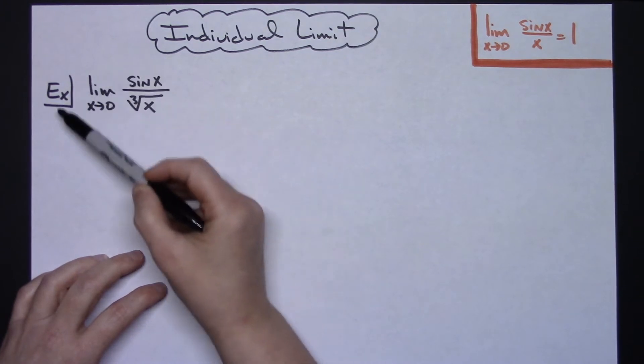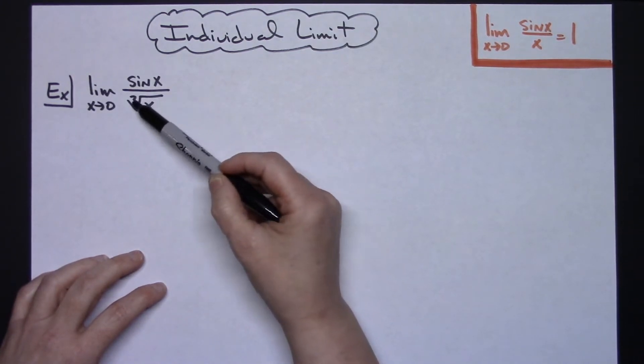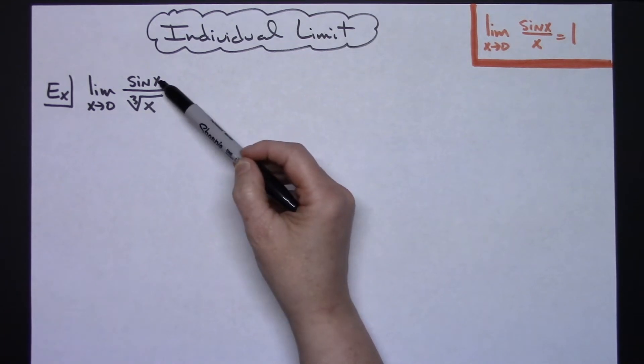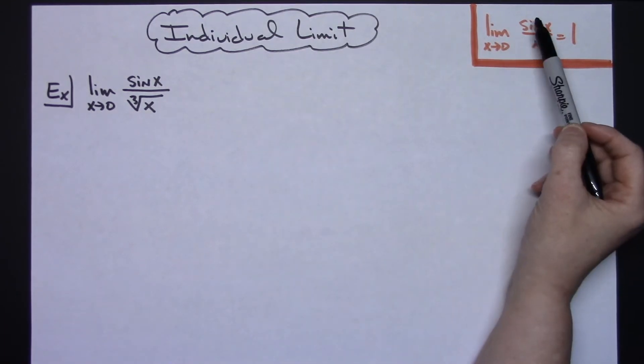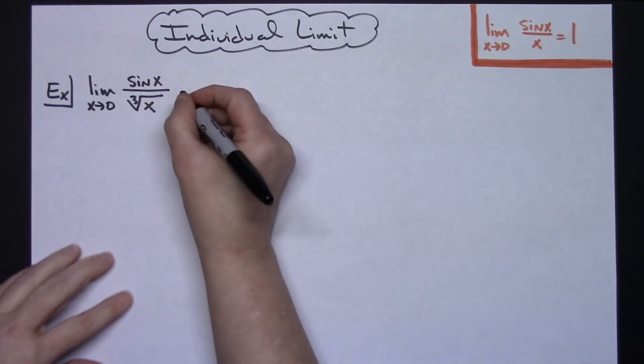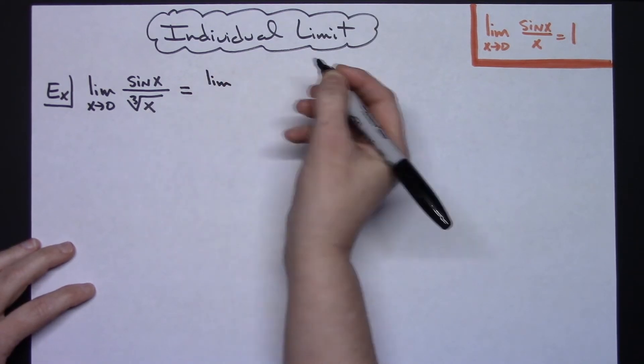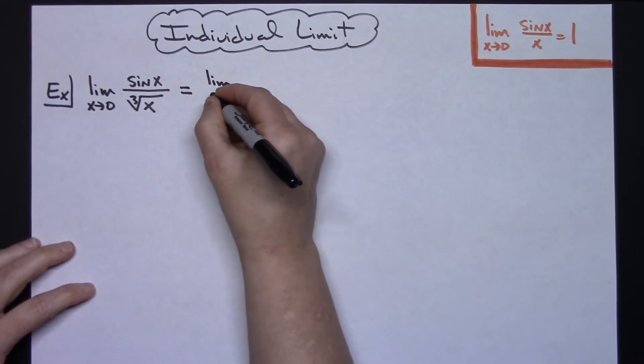In this limit I've got the limit as x approaches zero of sine x over the cube root of x. The sine x is already in the numerator, but in the bottom I've got x to the one-third. Let's rewrite that as a fractional exponent: the limit as x approaches zero of sine x over x to the one-third.